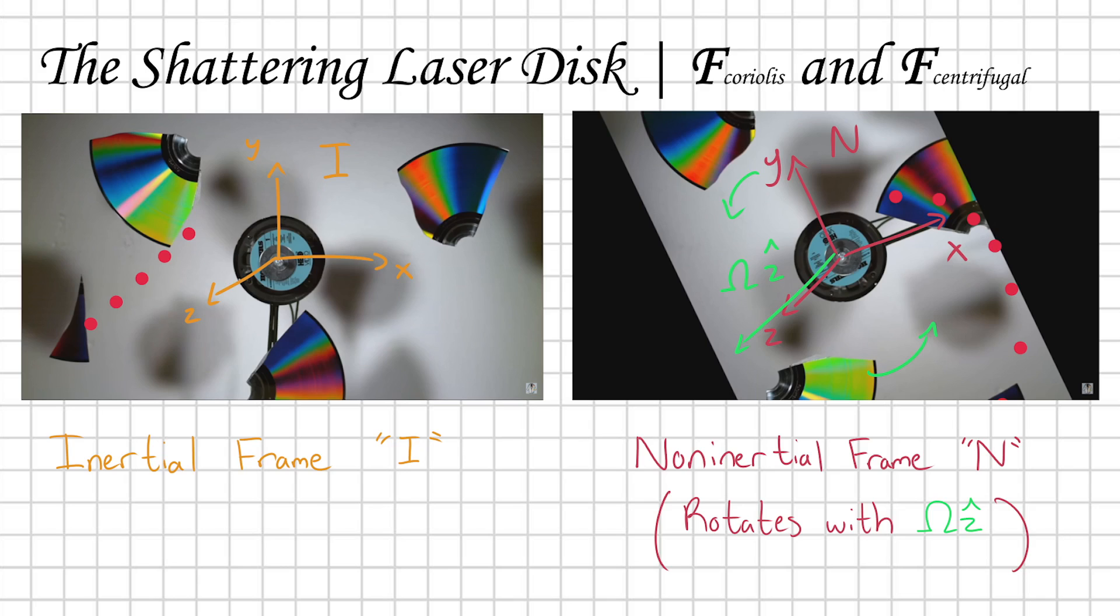So the first thing I want to make super clear is that because we know that N is rotating with respect to I, I could take the linear motion of the fragment in the I frame and then transform it with a rotation matrix to determine the fragment's motion in the N frame.